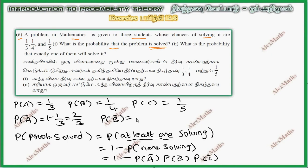P of B bar is 1 minus 1 by 4, 3 by 4. P of C bar, 1 minus 1 by 5, 4 by 5. So if the values are substituted, 1 minus 2 by 3 into B bar, 3 by 4, into C bar, 4 by 5. So 3, 4 cut, 4 cut, 1 minus 2 by 5, 3 by 5.